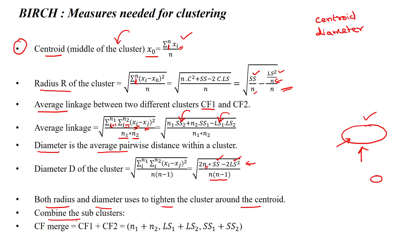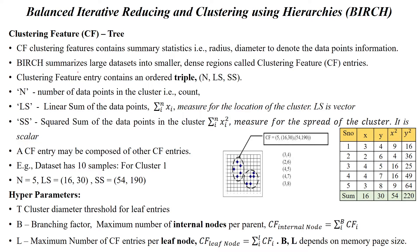We can combine sub-clusters by using cluster features merge. We will merge cluster feature 1 and cluster feature 2 in the form of: the number of data points in cluster 1 plus cluster 2, the linear sum of cluster 1 plus linear sum of cluster 2, and the squared sum of cluster 1 plus squared sum of cluster 2. By applying this matrix, we can form the clustering feature tree.